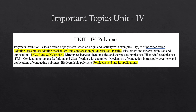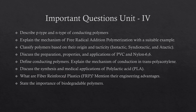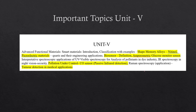Unit 4 is polymers. You may have heard of plastics, elastomers, and fibers — PVC pipes, Nylon 6,6, Buna-S — these are all polymers. Also covered is polyacetylene and its applications as a conducting polymer. Important questions from unit 4 include: p-type and n-type conducting polymers, preparation, properties and applications of PVC and Nylon 6,6, the importance of biodegradable polymers, fiber-reinforced plastics and their engineering advantages, and synthesis and medical applications of polylactic acid.